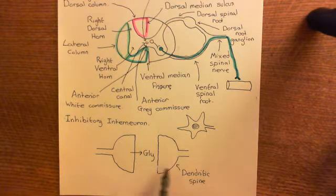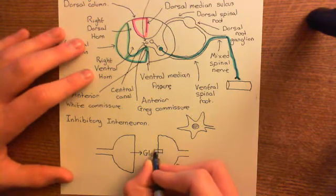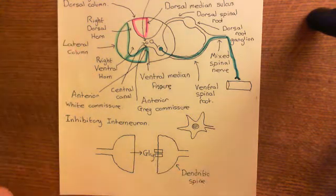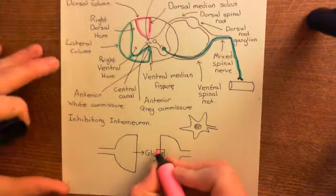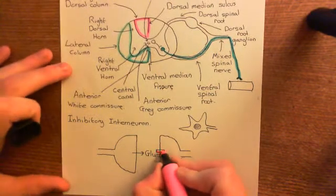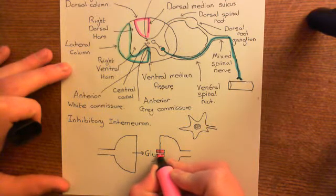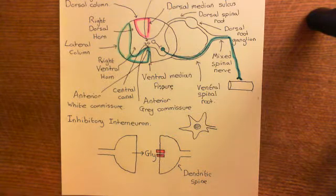So how does glycine have an effect on this dendritic spine? Basically, there are glycine receptors in the membrane of this dendritic spine. This is a glycine receptor, drawn here in pink. Let's now discuss what happens when glycine binds to and activates the glycine receptor.